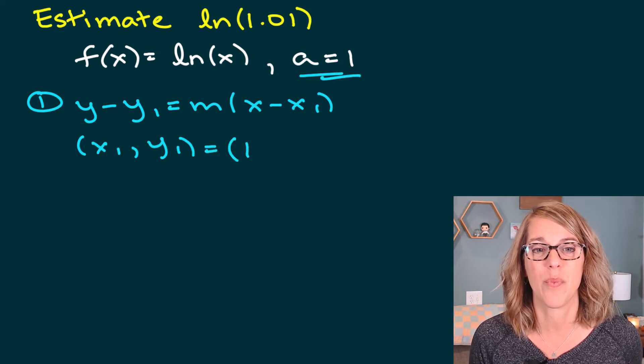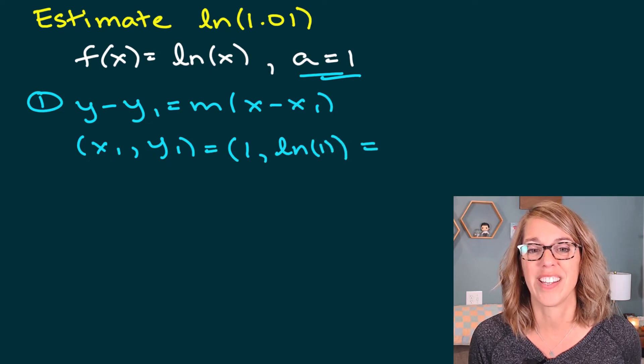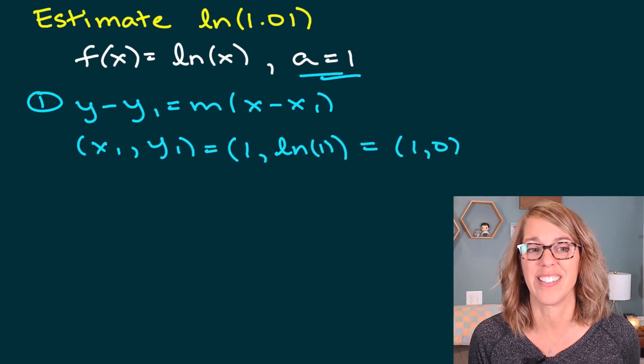So x₁ comma y₁, I'm using my point of tangency, which is 1. So that's going to be 1 comma natural log of 1, which is (1, 0).